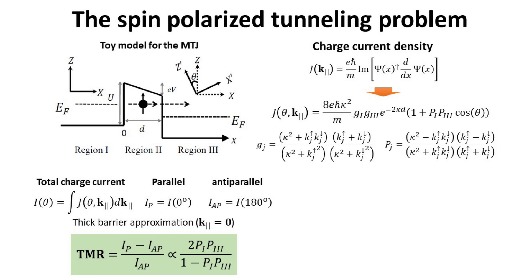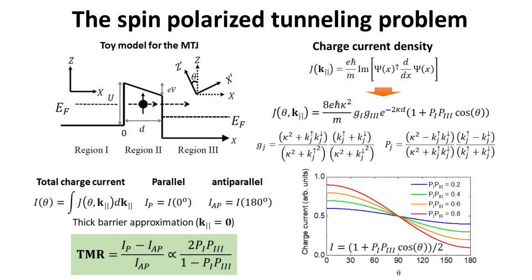We explicitly show the angular dependence of the tunneling current, where different curves correspond to MTJs with distinct tunneling spin polarization products. The charge current reaches a minimum when the misalignment angle between the two magnetizations is 180 degrees — that is, in the anti-parallel configuration — so the MTJ is in a high resistance state. The maximum of the charge current is obtained when the misalignment angle is 0 degrees, the parallel configuration, placing the MTJ in a low resistance state. The plot shows that the maximum difference between the two configurations is obtained when the product of the tunneling spin polarizations is close to one, so the model predicts the largest TMR ratio at nearly ideal tunneling spin polarizations.